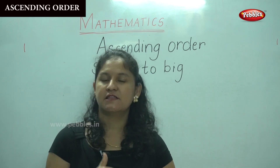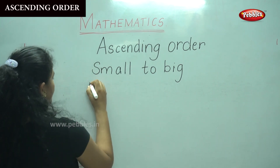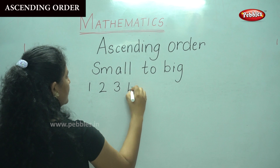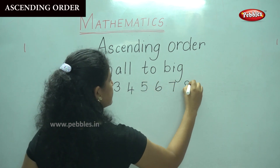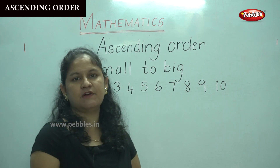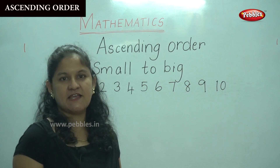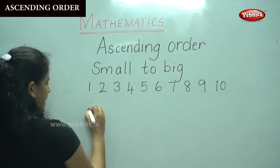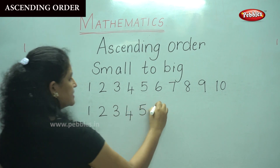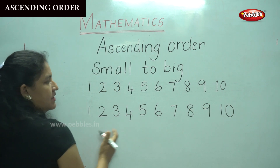Now we are going to arrange the numbers 1 to 10 in ascending order, that is from small to big. So we have numbers 1, 2, 3, 4, 5, 6, 7, 8, 9, and 10. Now I am going to put these numbers in ascending order. Small to big is the same as the normal order of numbers from 1 to 10, so: 1, 2, 3, 4, 5, 6, 7, 8, 9, 10. It starts from the smallest number to the biggest number.